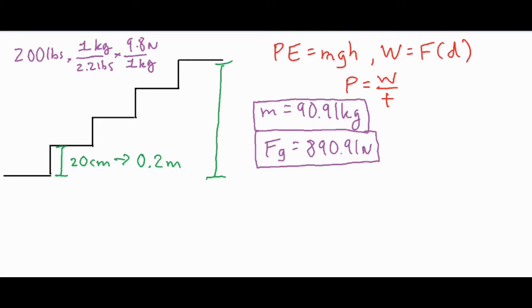And then we're going to count how many times we step up from the initial floor level, which is one, two, three, four. So we're going to rise up four times, so times four steps, and then 0.8 meters is our total vertical distance.